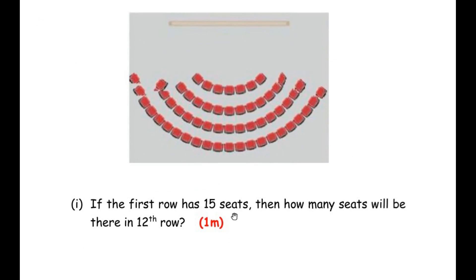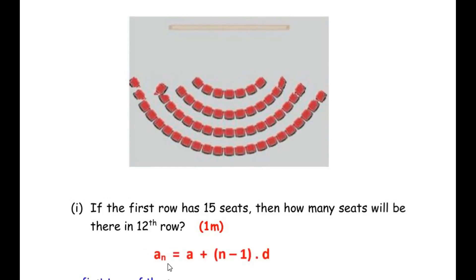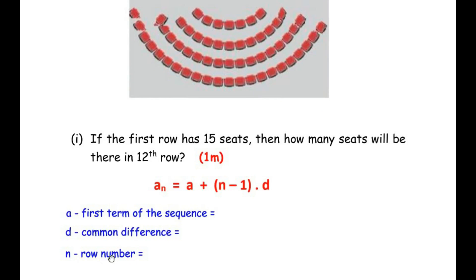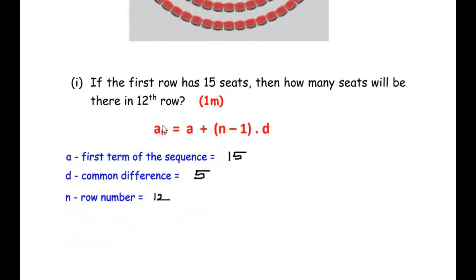The first sub-question says: if the first row has 15 seats, how many seats will be there in the 12th row? We are going to make use of the nth term of an AP formula, which is: a_n = a + (n − 1) × d. Here a_n represents the nth term, a represents the first term, d is the common difference, and n represents the row number. The first term a is 15, the common difference d is 5 because each row has five more seats than the previous one, and n is 12.